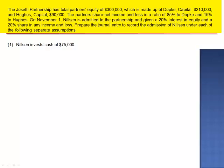Prepare the journal entry to record the admission of Nilsen under each of the following separate assumptions. Assumption 1: Nilsen invests cash of $75,000.